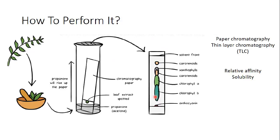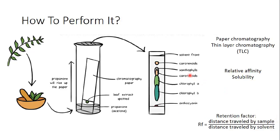After obtaining the different substances stuck on the paper, we identify them using something called the retention factor. Each substance has a known retention factor. The retention factor is the distance traveled by the substance divided by the distance traveled by the solvent. For example, for carotenoids, it's the distance from the origin to where the substance stopped, divided by the distance from the origin to where the solvent front reached. This is an identification factor used in TLC or paper chromatography.